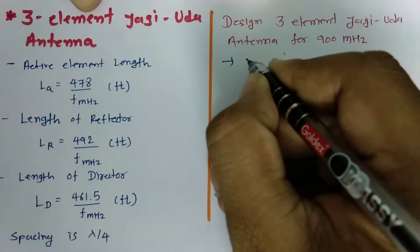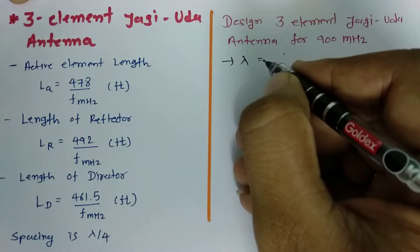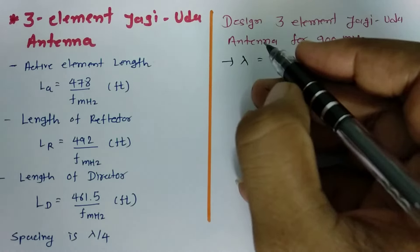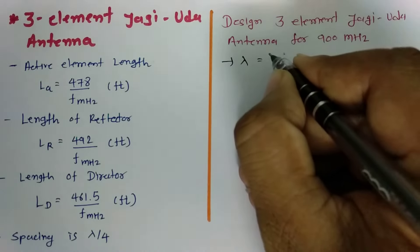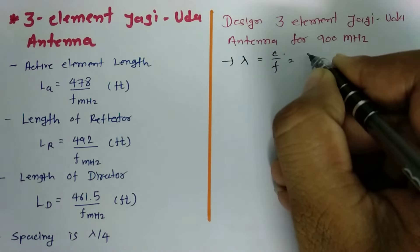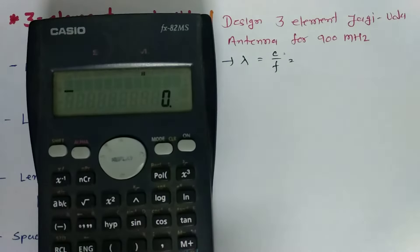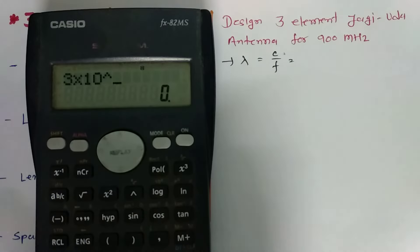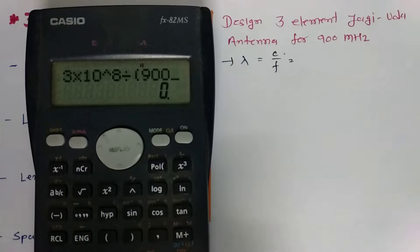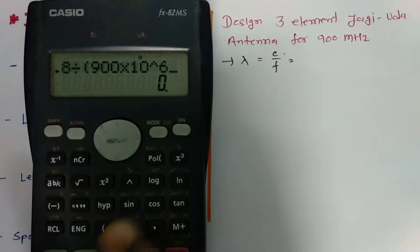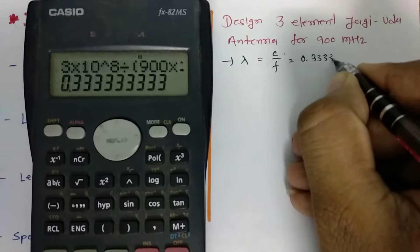With 900 MHz frequency, we can calculate the wavelength. We need lambda to calculate the spacing. Lambda equals C divided by F, which is 3 × 10^8 divided by 900 MHz, giving us 0.3333 meter.